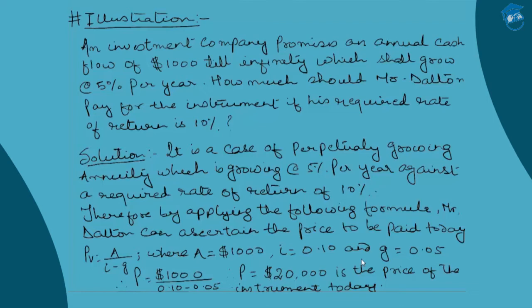I hope this discussion on perpetuity — specifically the concept that when n approaches infinity the common ratio r raised to the power n approaches zero — is clear. We saw how the formulas change under both cases: an ordinary infinite annuity and a growing infinite annuity. Let's now proceed with the last leg of our discussion under time value of money: multi-period compounding.